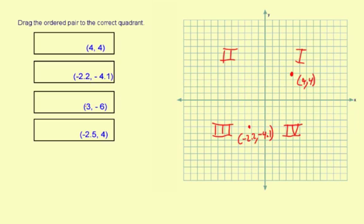The next coordinate, 3, negative 6. 1, 2, 3 to the right. And then negative 6 means 6 down. 1, 2, 3, 4, 5, 6. Just right here. And that's 3, negative 6.